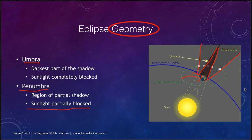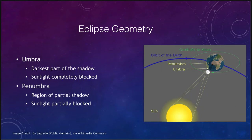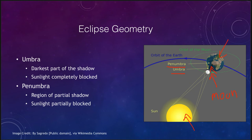A solar eclipse looks a little different. In this geometry, the moon is now in between the earth and the sun, blocking the sun's light from reaching the earth. We still have the two types of shadows — the penumbra and the umbra. If you're in the umbra, the small dark portion, you would get a total solar eclipse and the sun's light would be completely blocked. If you're in the wider penumbra, the sun's light would only be partially blocked, so some sunlight would still get through.